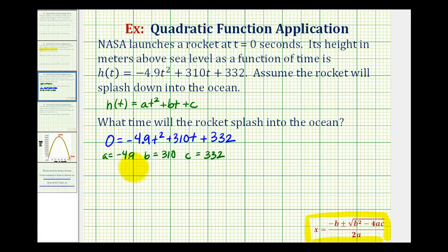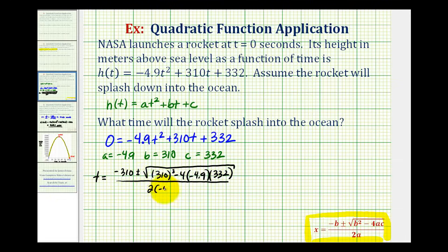So now we'll substitute these into the quadratic formula and then evaluate. So instead of x equals, we'll have t equals -310 plus or minus the square root of b squared, or 310 squared, minus 4 times a, which is -4.9, times c, which is 332, divided by 2 times a, or 2 times -4.9.